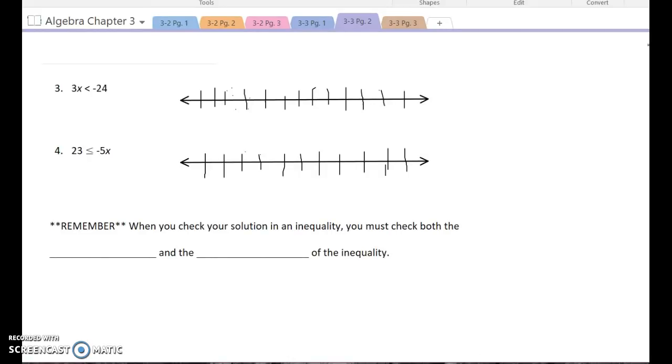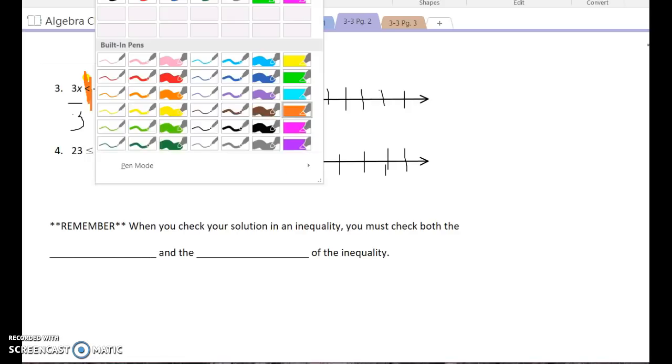So when I look at this number three, to get my x alone, I have to divide both sides by three. Now, some of you are going to look at this and you're going to say, hey, I got a negative number. And you're right, there is a negative 24. But what you have to focus on is what's the number you're dividing by. Since the number I'm dividing by is positive, then I'm not going to need to switch my inequality sign.